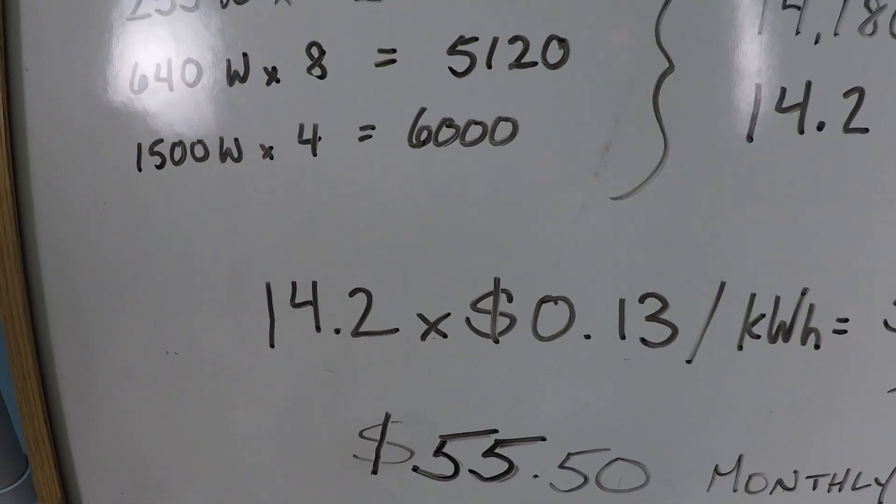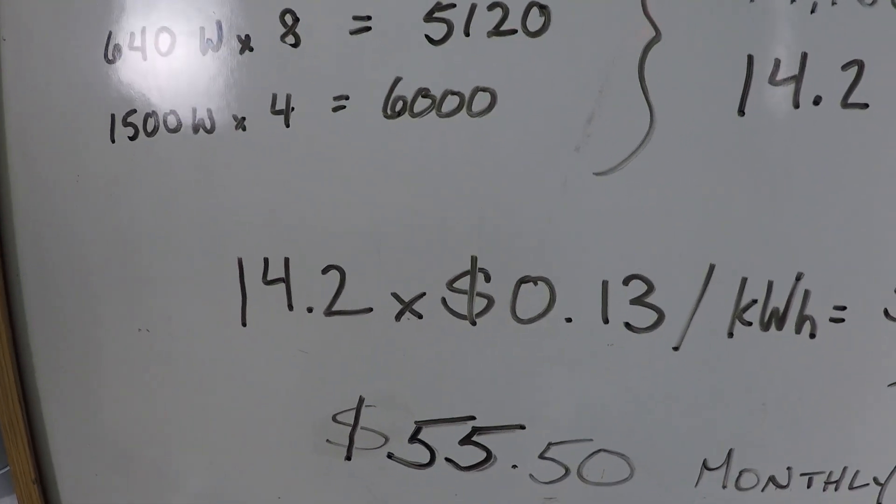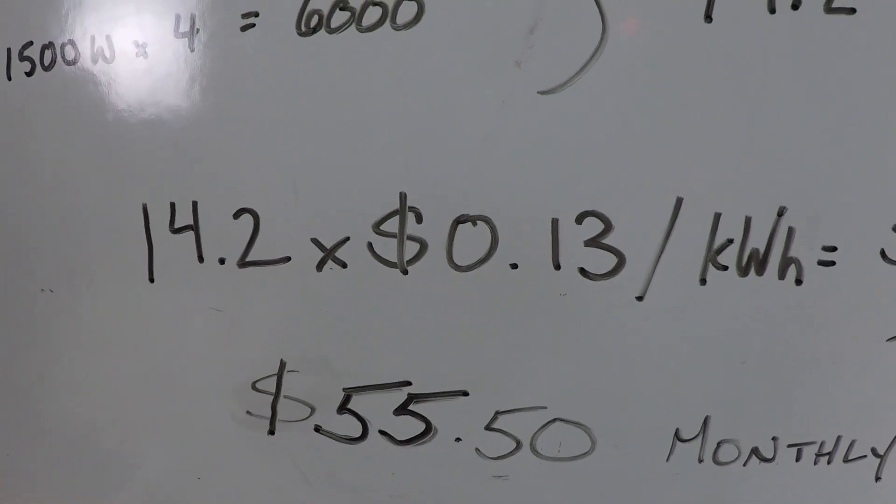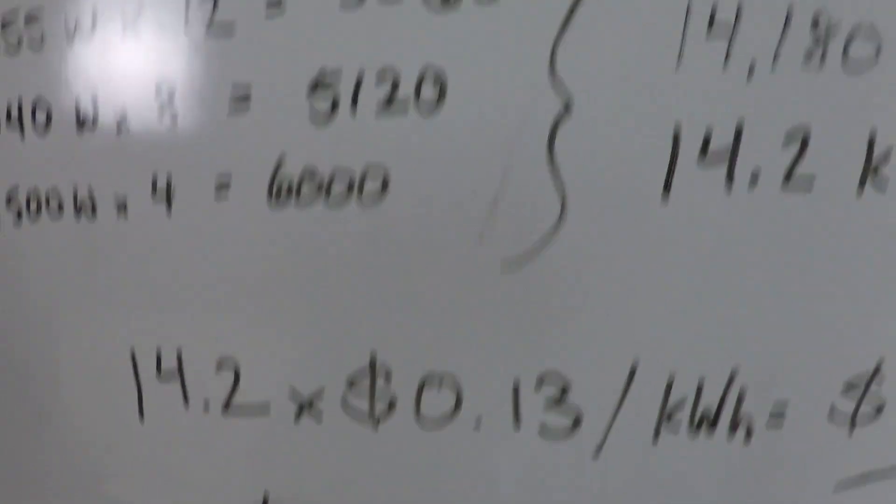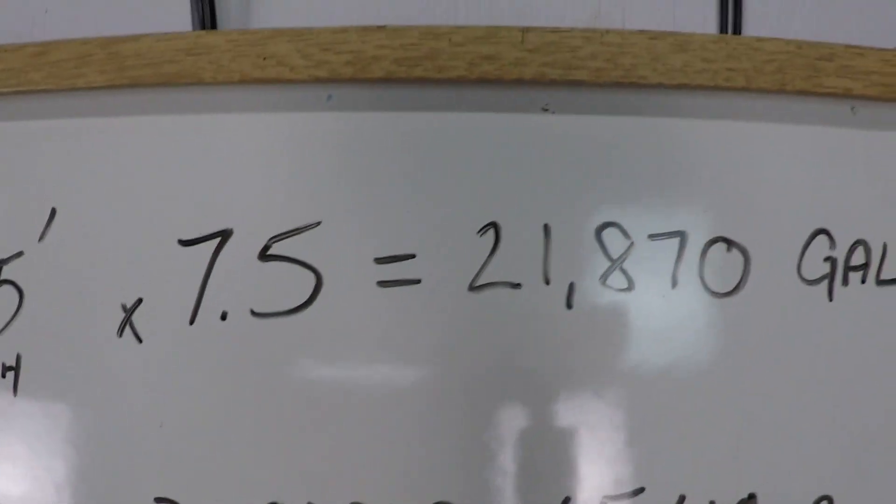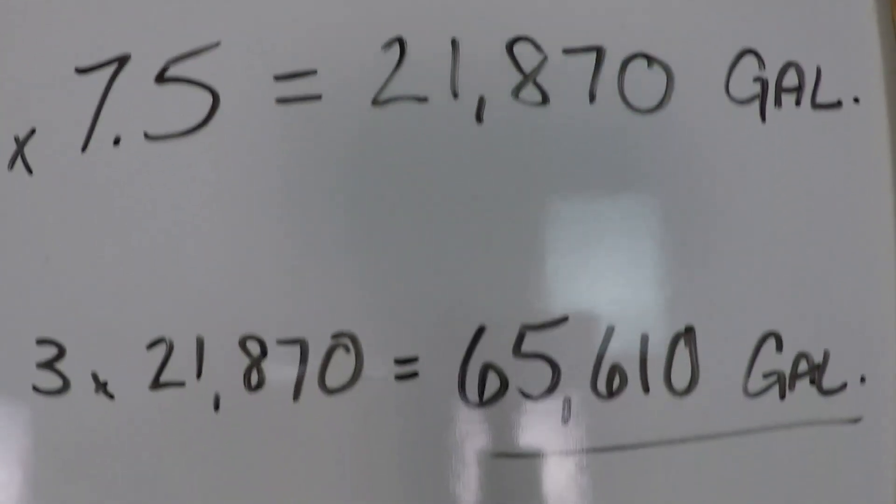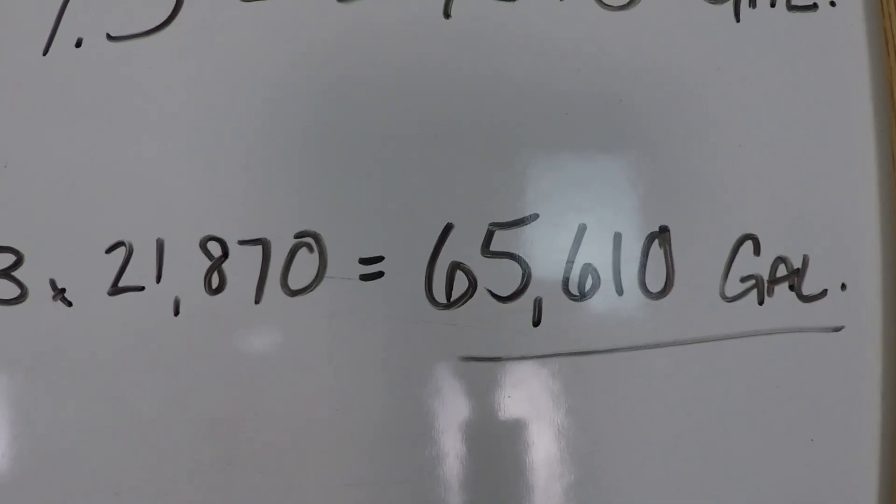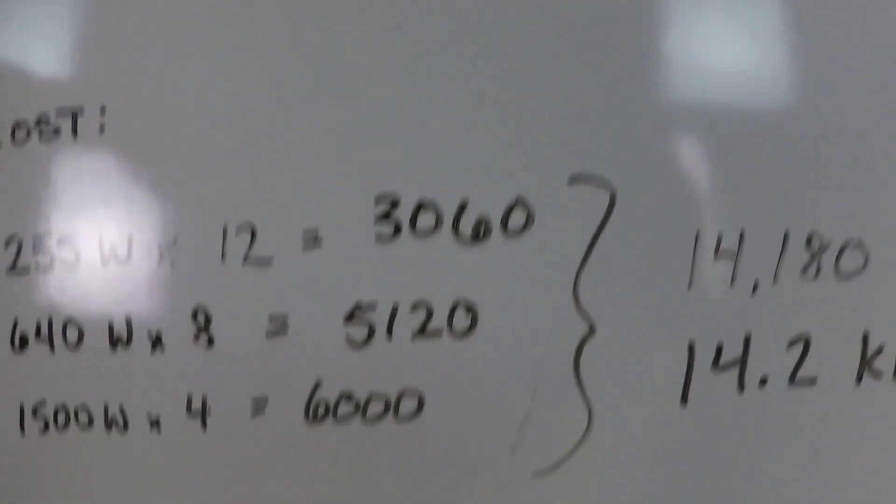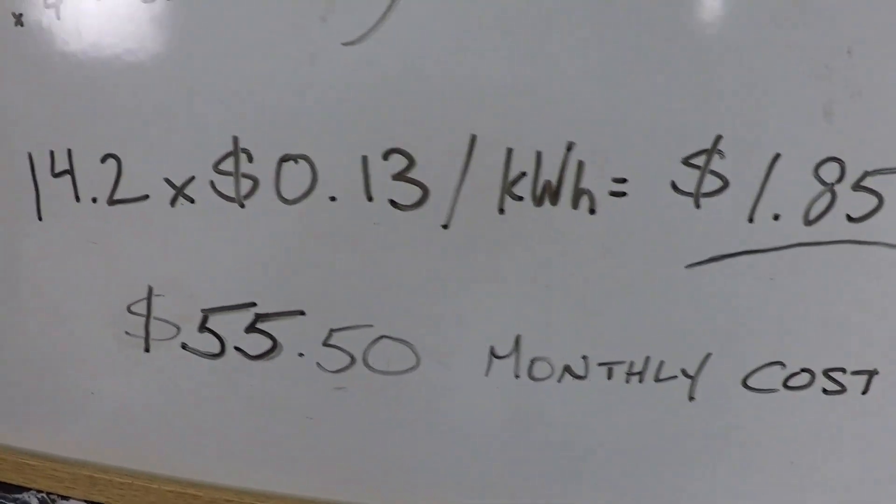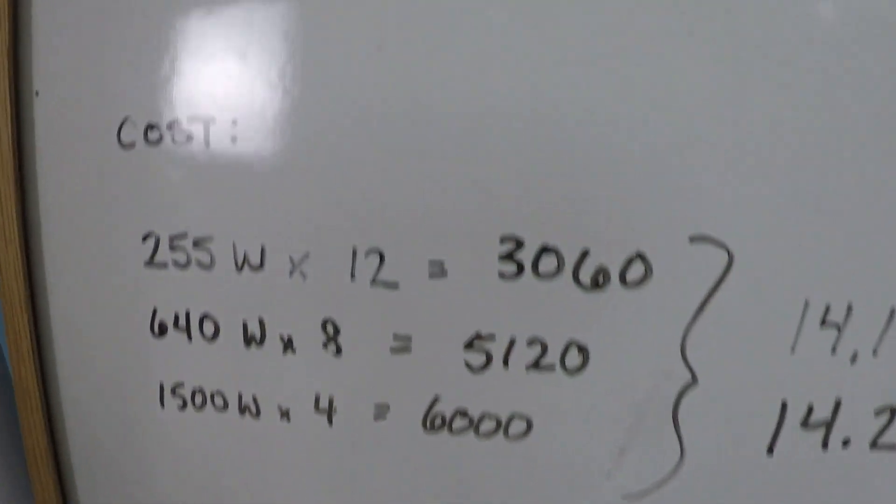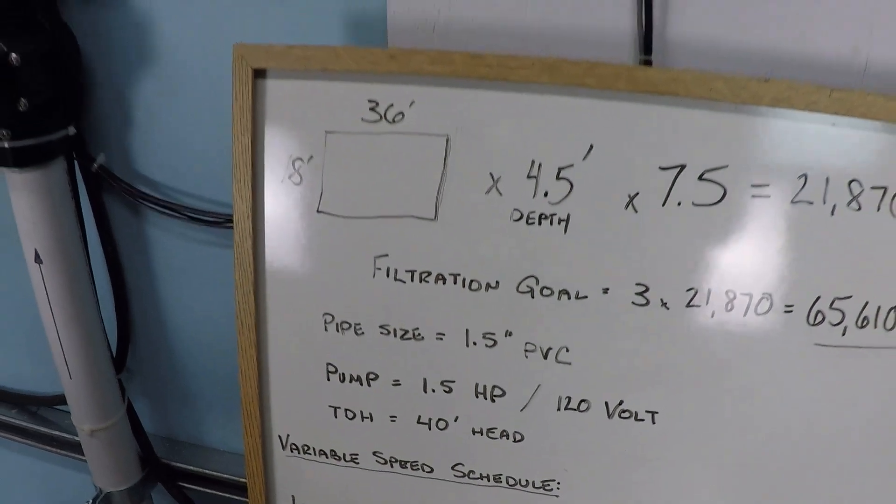One dollar and 85 cents - that's what it's going to cost you to run this variable speed schedule for this 18 by 36 pool, filtering three turnovers equaling 65,000 gallons of filtered water daily. Total cost: $55.50 based on 30 days. So as you can see, it's really quite affordable.